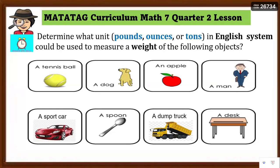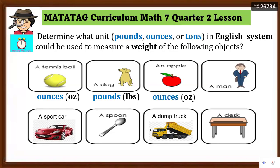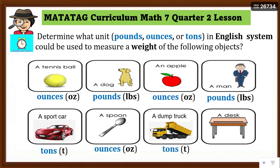For a tennis ball, the answer is ounces (oz). Next, a dog — that is pounds (lbs). An apple — that is correct, ounces (oz). A man — correct, pounds (lbs). A sports car — that is correct, tons (t). A spoon — that is correct, ounces. A dump truck — very good, that is tons. And a desk — that is pounds (lbs).